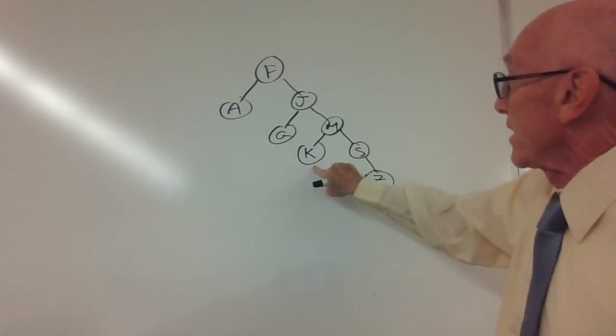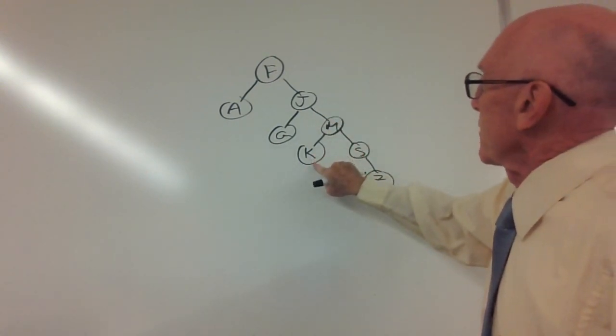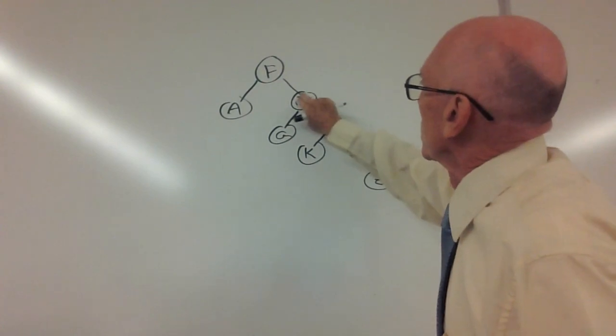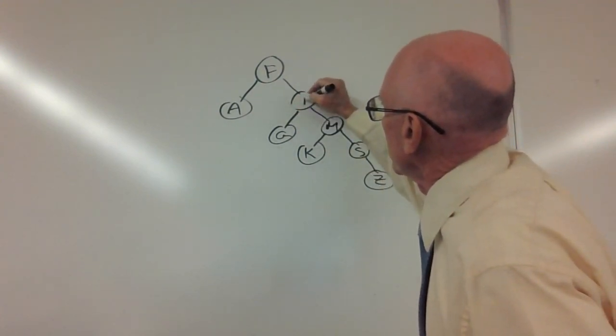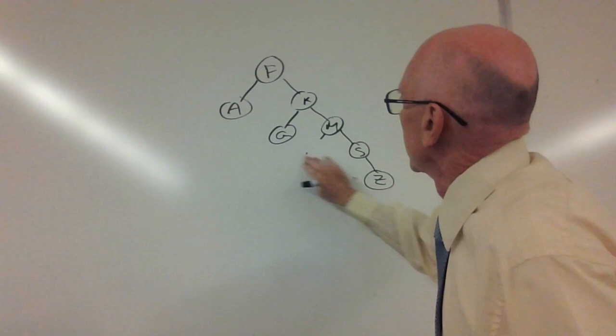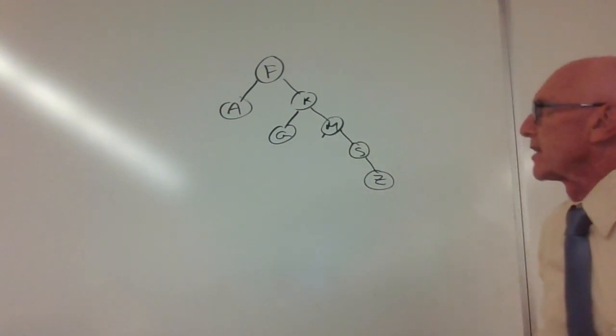That means the contents of K will replace what used to be there after we splice out the K, and there's nothing left there.